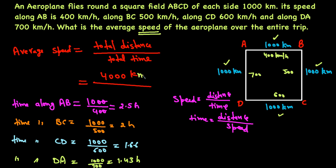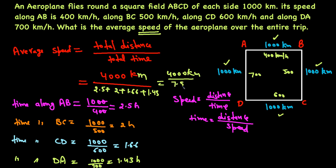Total distance is 4000 kilometers and total time is 2.5 plus 2 plus 1.66 plus 1.43, equaling 7.59 hours. Dividing 4000 by 7.59 gives approximately 527 kilometers per hour as the average speed of the aeroplane along the square field.